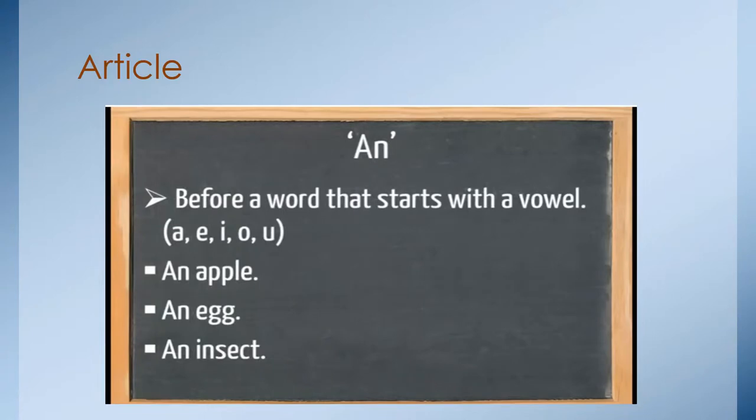AN. Before a word that starts with a vowel. What is A, E, I, O or U? An apple. An egg. An insect.